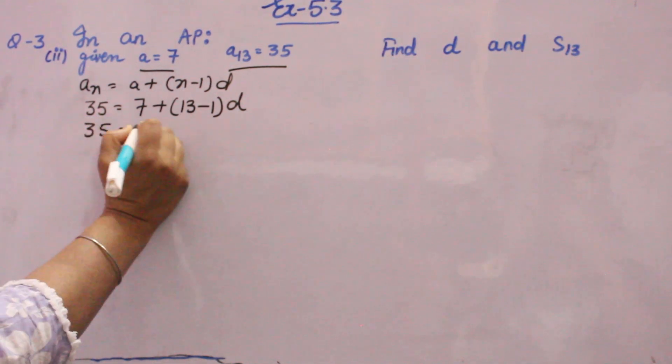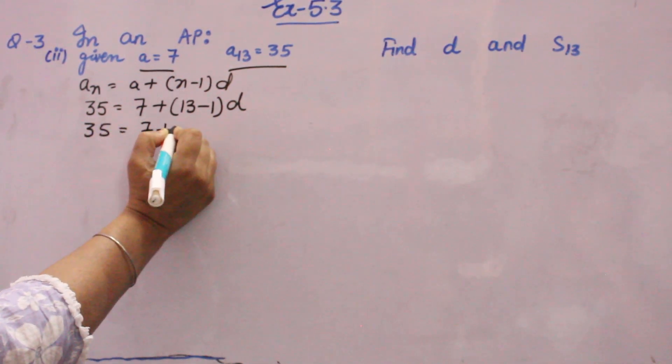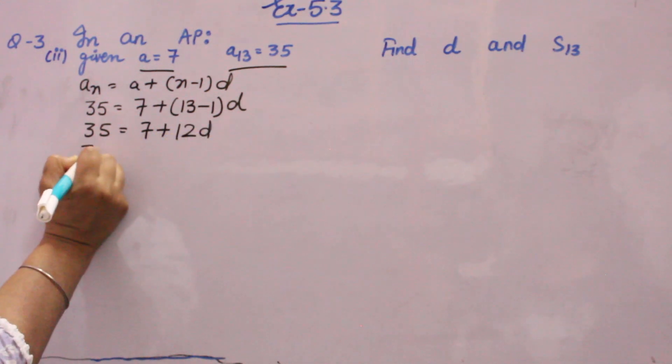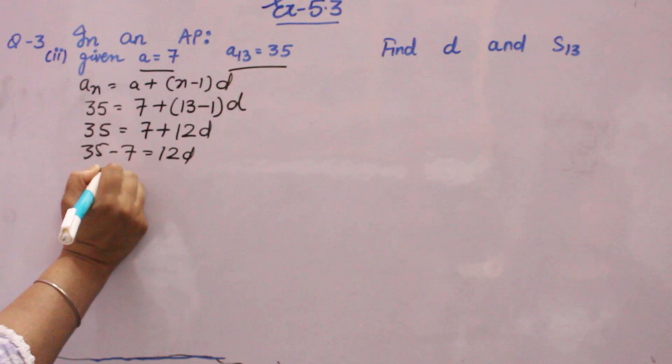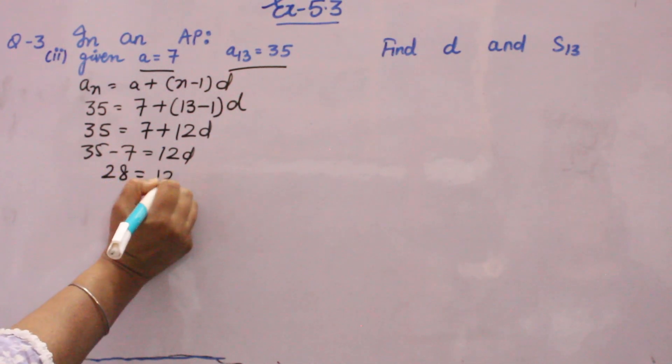35 is equal to 7 plus (13 minus 1), 12, 12D. Now, 35 minus 7 is equal to 12D. 35 minus 7 is 28, 28 is equal to 12D.